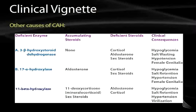A second less common cause is 17-alpha-hydroxylase deficiency. This enzyme is responsible for the conversion of pregnenolone and progesterone to 17-alpha-hydroxypregnenolone or 17-alpha-hydroxyprogesterone. This blocks formation of both glucocorticoids and sex steroids but allows continued production of mineralocorticoids, leading to accumulation of mineralocorticoids — causing salt retention, increased volume, and severe hypertension — along with hypoglycemia and lack of secondary sex characteristics.